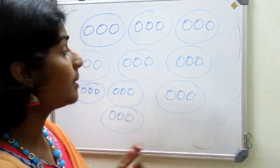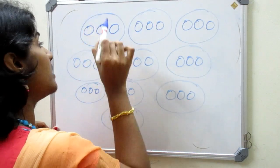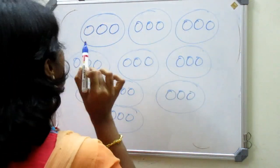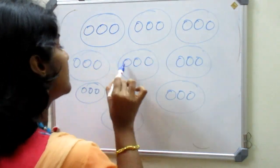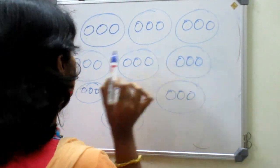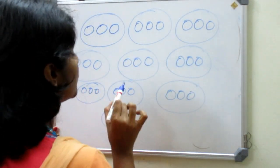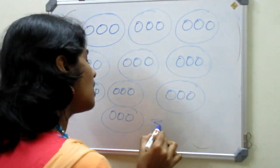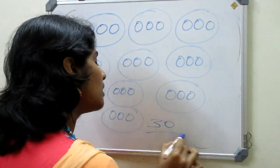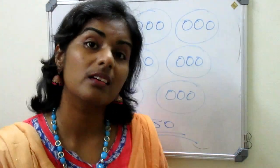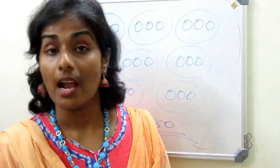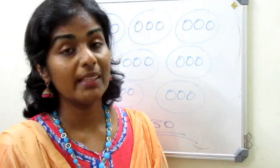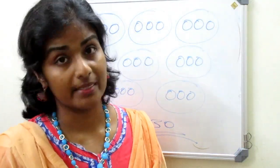If I don't know multiplication, I will add 1, 2, 3, 4, 5, 6, 7, 8, 9, 10, 11, 12, 13, 14, 15, 16, 17, 18, 19, 20, 21, 22, 23, 24, 25, 26, 27, 28, 29, 30. Oh my god, I got so tired! The answer is 30, I found the answer, but the method was a little bit tiring.